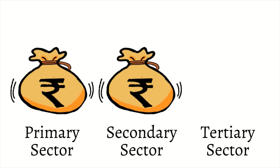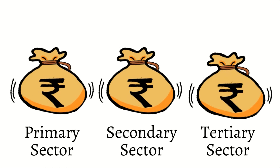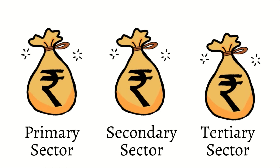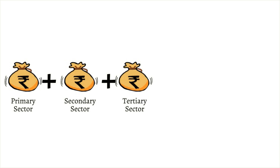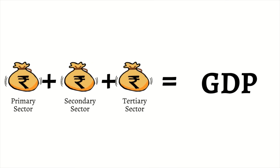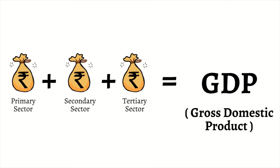So to measure total production in the country, we add only the value of final goods and services. This gives us our GDP — Gross Domestic Product. GDP measures how much production has been produced in the country.